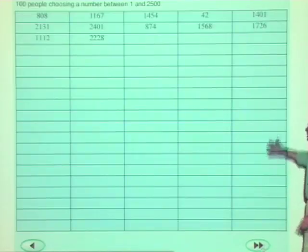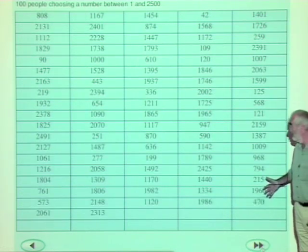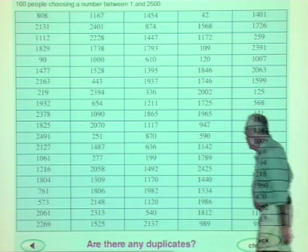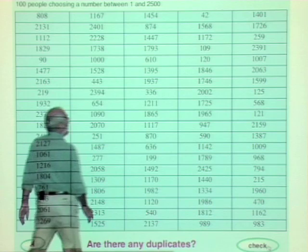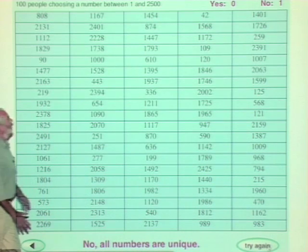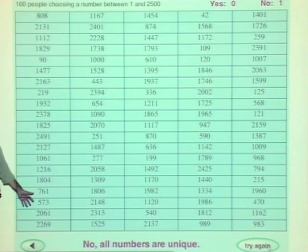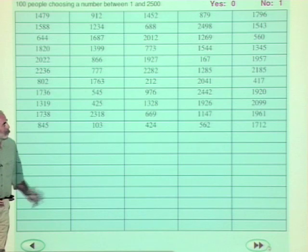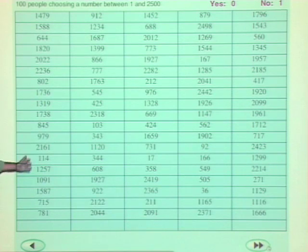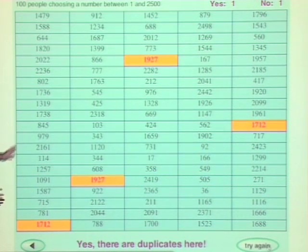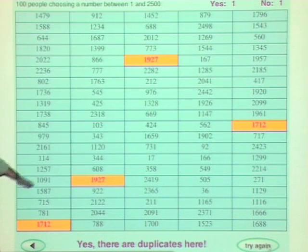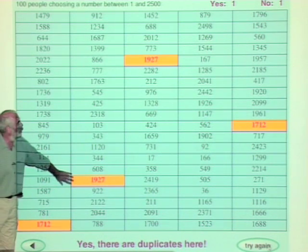We're generating these at random from the computer to see if there are any duplicates. First check: they do all choose different numbers. Let's try it again, because we don't know whether this is going to work or not. Checking again — yes, we've got two pairs here. Two have chosen 1,712, and two have chosen 1,927.